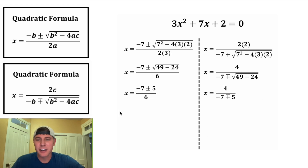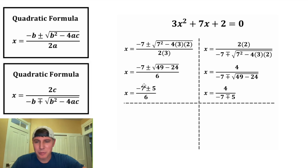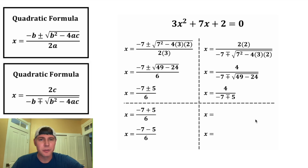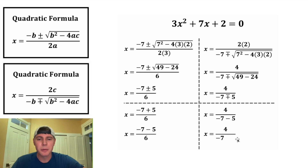And now let's smush everything together, and we're ready to finish up. We have x equals, and the plus or minus right here means we're going to have two values of x. Both values will have a negative 7 over 6, but the first one is going to be plus 5, and the second one minus 5. On the right-hand side, the minus plus means there are two answers — they both have 4 and negative 7, but the first one is negative 5 and the second one is plus 5.